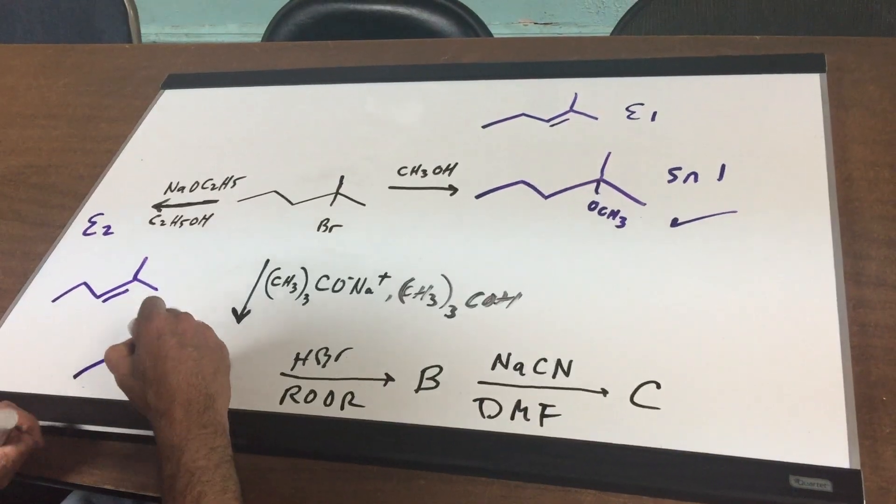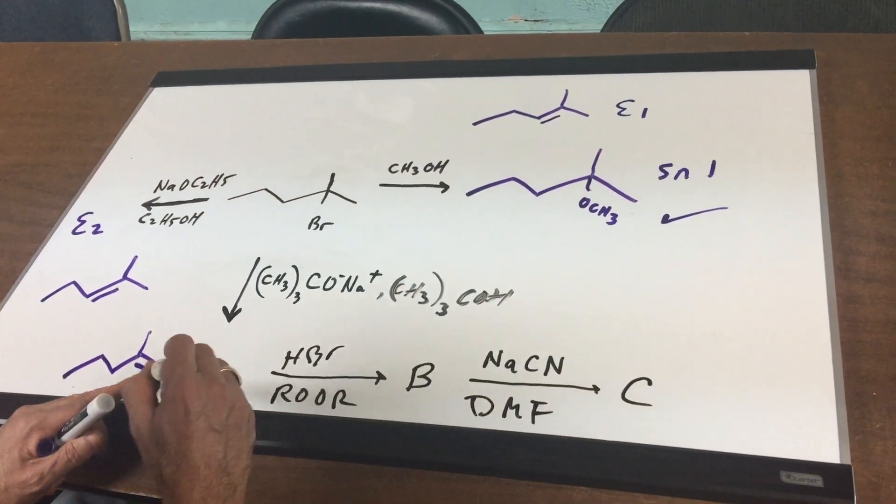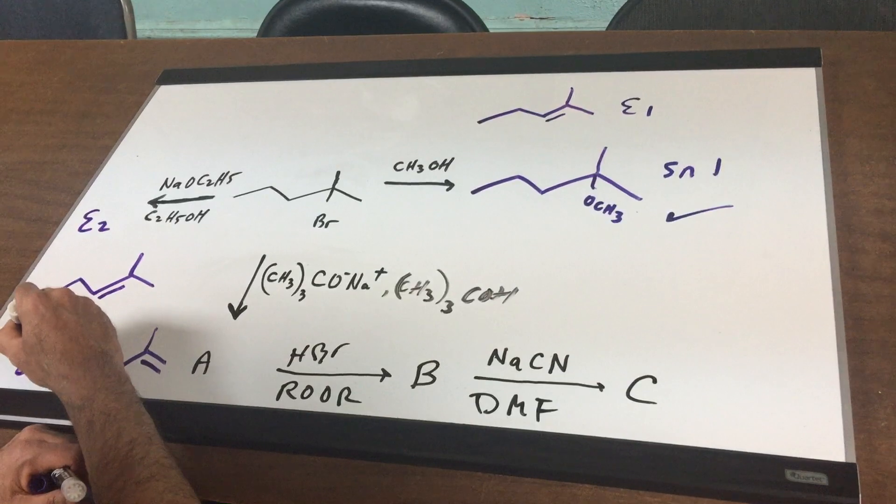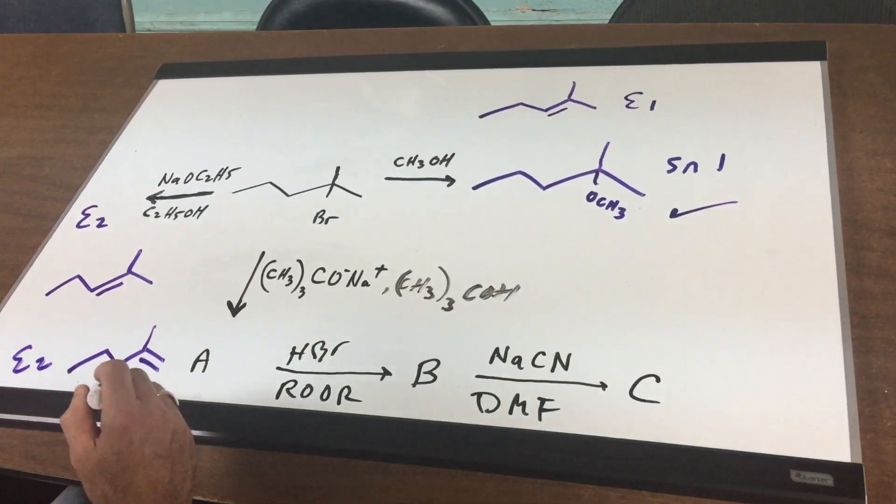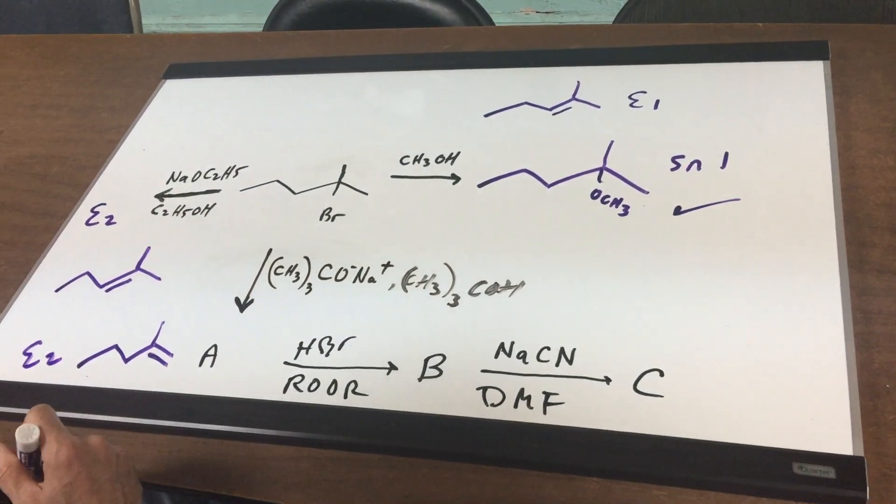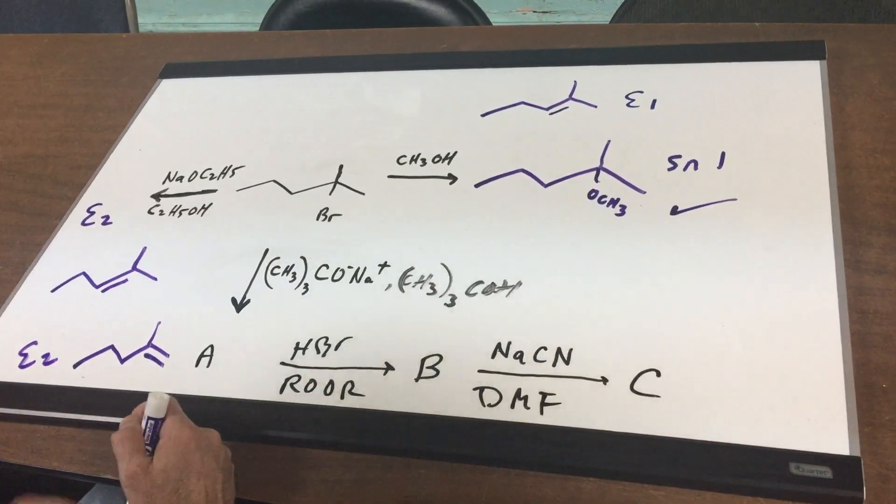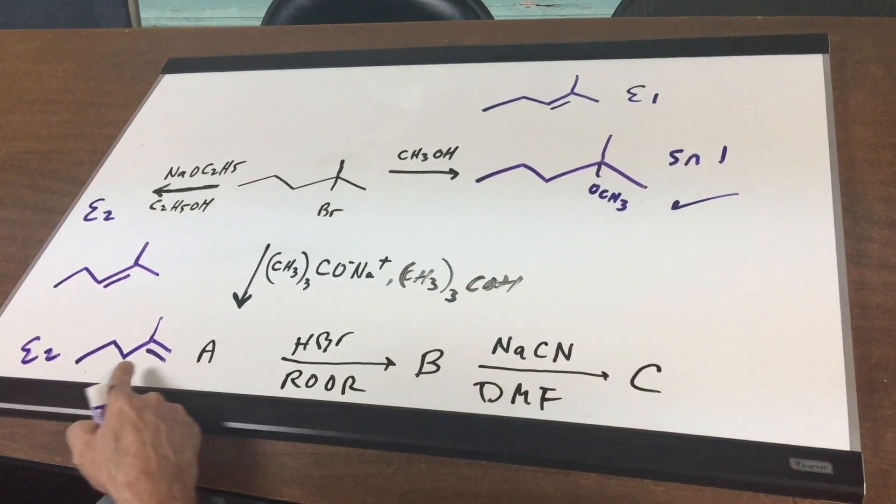but this time, you're going to get the less substituted alkene, and that's going to be the E2, but instead of being Zaitsev, this would be what we call the Hoffman product. All right. Next. That's A.